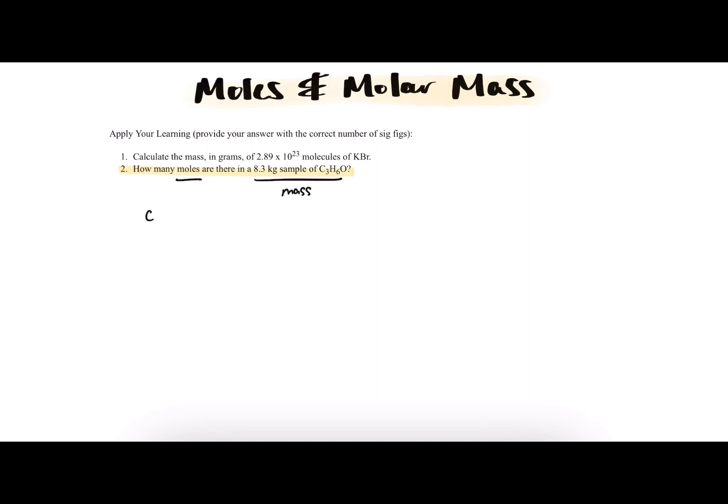So since our components are carbon, hydrogen, and oxygen, we'll need to know the molar masses of each of these individual elements to find the molar mass of C3H6O.